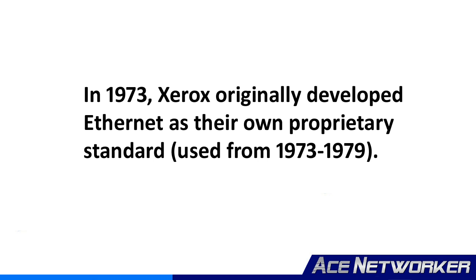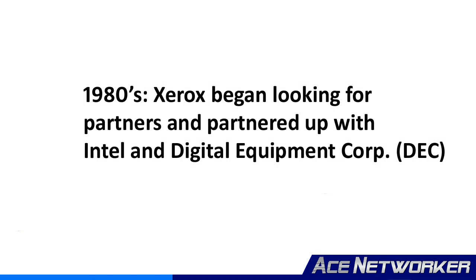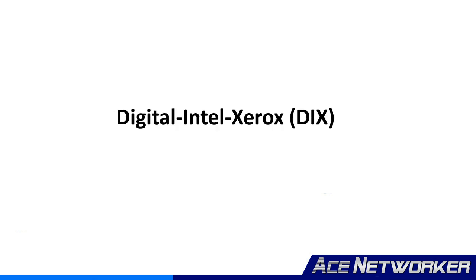Ethernet was originally developed and introduced in 1973 by Xerox Corporation. Xerox used Ethernet as their own proprietary technology until around 1979. Beginning in 1979 and moving into 1980, Xerox began looking for partners to help promote Ethernet as an industry standard. They started working with Intel and Digital Equipment Corporation, or DEC, and published a networking standard known as Digital Intel Xerox, or DIX. The DIX standard defined how a bus topology using coaxial cable enabled multiple computers or devices to communicate with each other at a speed of 10 megabits per second.